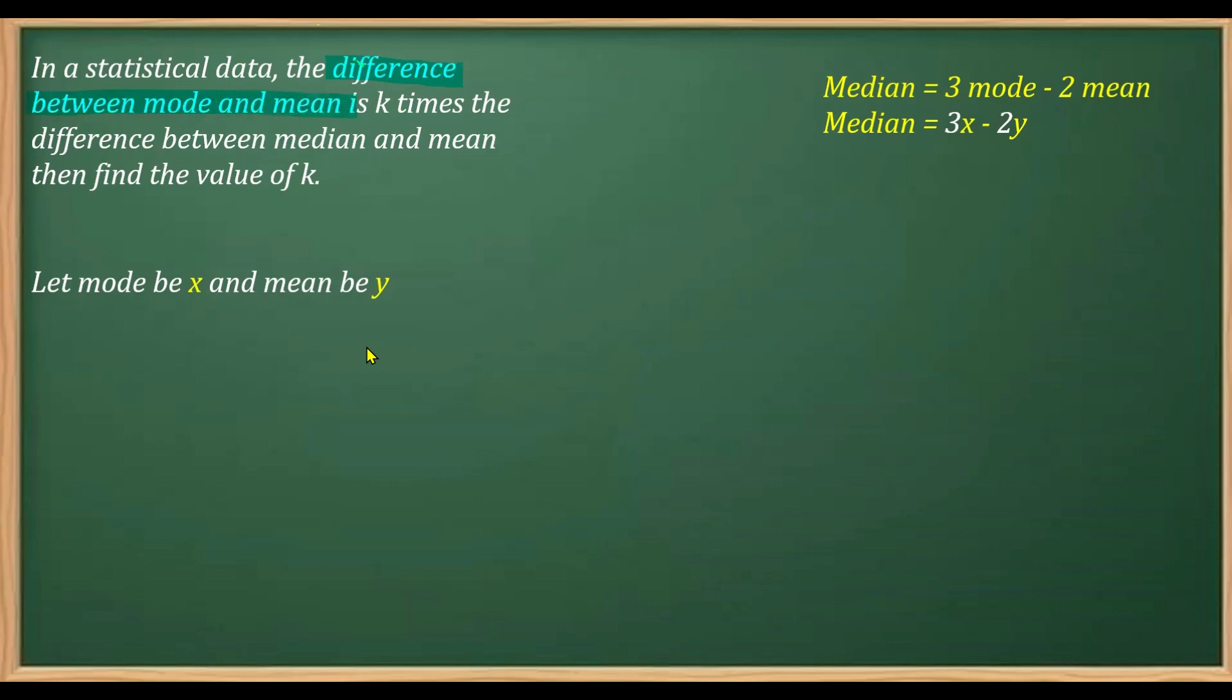We need another relation which is from here, that is the difference between the mode and the mean. Mode is x minus y is equal to k times the difference between the median and the mean. The difference between the median, median is this, right? Difference between the median and the mean, that means minus y.